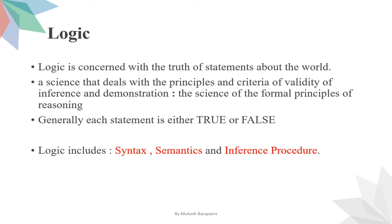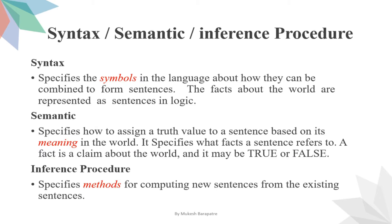For example: Ram and Sham are brothers. Ram is one individual and Sham is another; both are human beings with a brother relationship. From this fact, I can infer that Sham is a brother of Ram, and Ram is a brother of Sham. This is the inference mechanism — we create a method by which we can derive new statements or new facts from existing ones. That is the inference procedure.